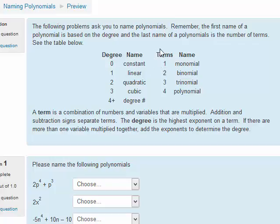The second name of a polynomial has to do with the number of terms. Terms are separated by a plus sign or a minus sign.